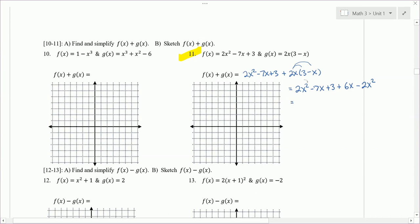Then we want to combine like terms. We have a positive 2x squared and a negative 2x squared. When you add those together, you get 0. We got a negative 7x and a positive 6x. When you add those together, you get negative x and then we get a positive 3.